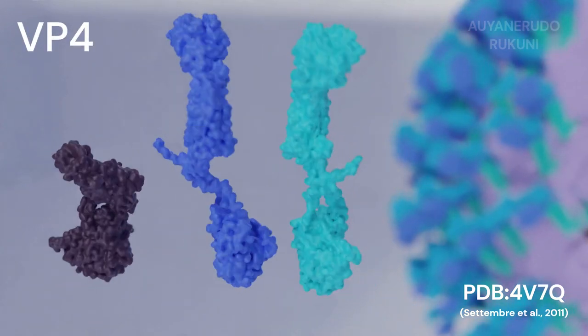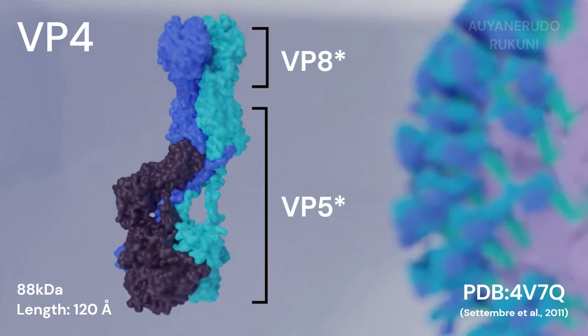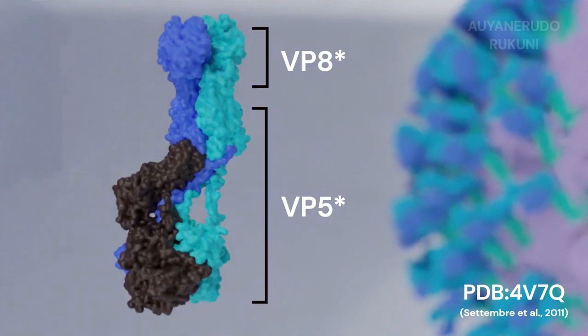Finally, the trimeric VP4 spike protein is a key mediator of viral attachment and entry. VP4 is proteolytically cleaved by trypsin-like proteases into two fragments, VP8 and VP5, which remain noncovalently associated.